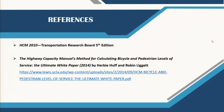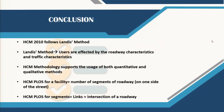In this lecture we have looked at the Highway Capacity Manual 2010 version and how to develop a pedestrian level of service score for an intersection as well as for a link. Thank you for your attention.